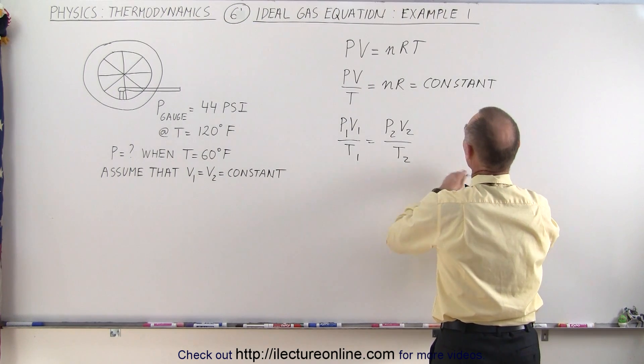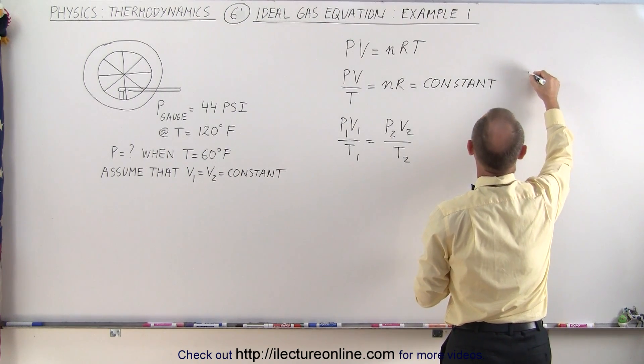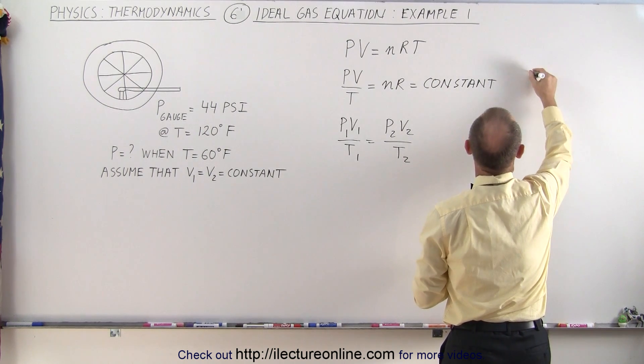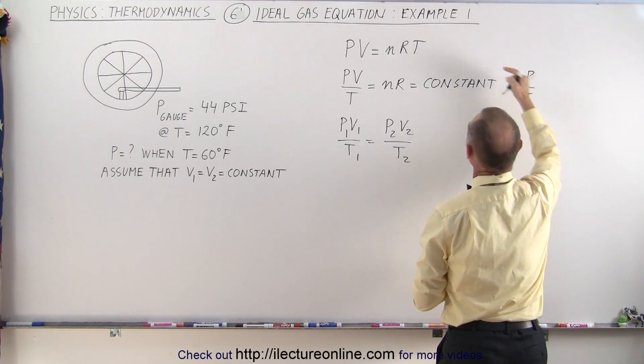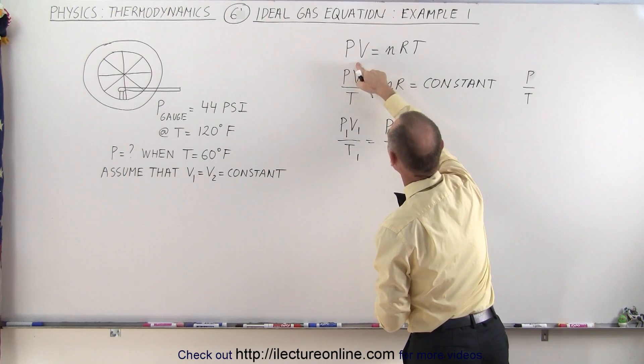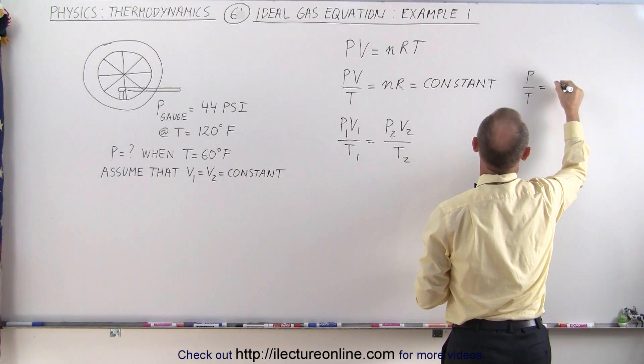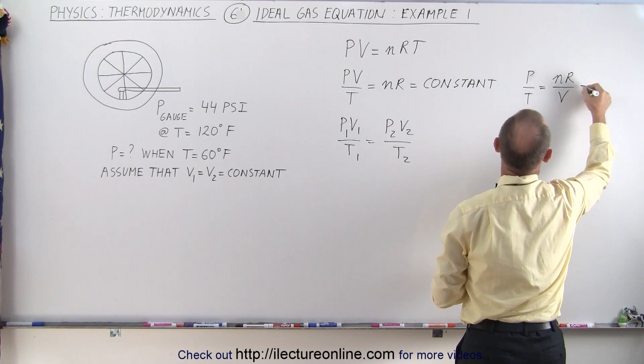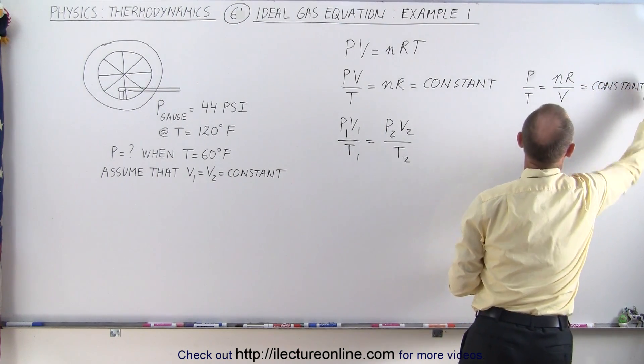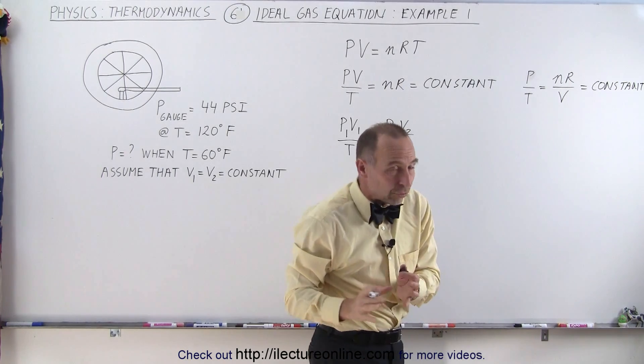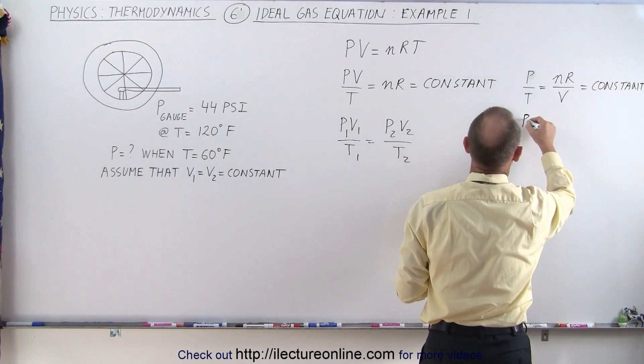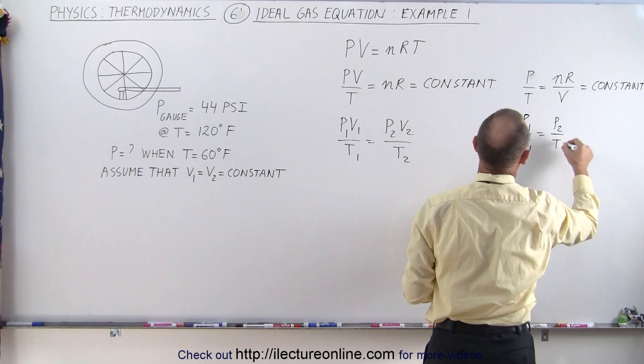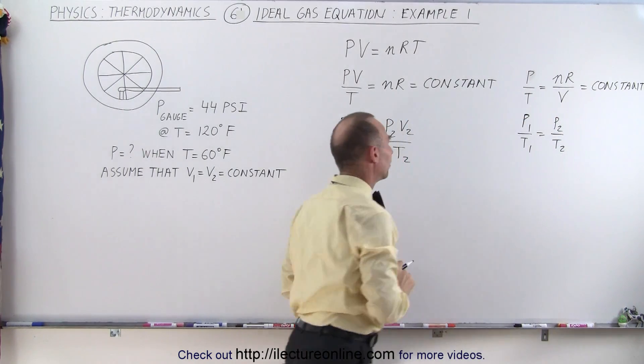So what we could have said, we could have said instead that P divided by T, I move the T over to this side, I move the V over to the other side. So we could write that P divided by T is equal to nR divided by V, which is equal to a constant. That means in this case, since V is also a constant, we can write that P1 over T1 is equal to P2 over T2, and we don't have to worry about the V.